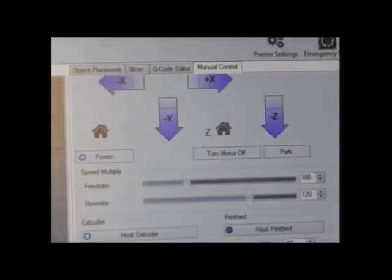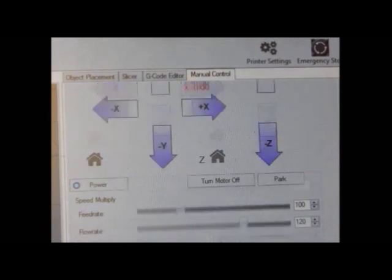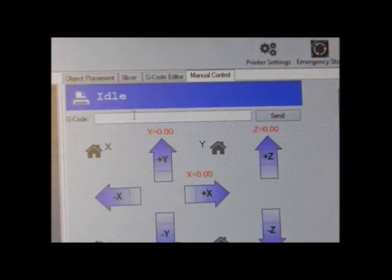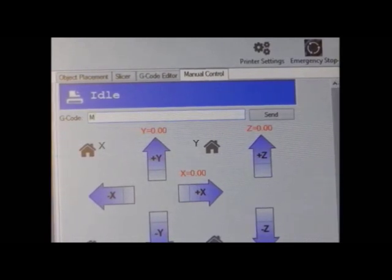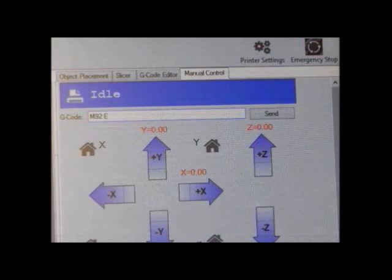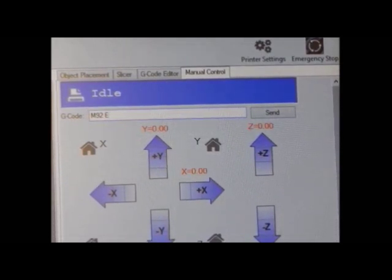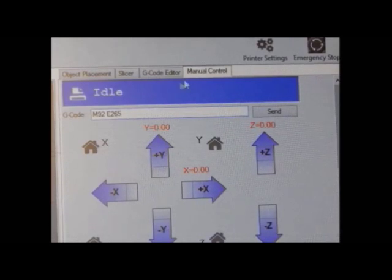To change this, you don't have to go to Marlin or Arduino IDE again. Just use your Repetier Host manual control page. And in this G-code column, enter M92 space E and our new E-step value. Let's keep it at 265 and click send.